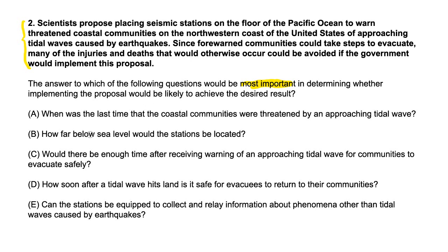B says: how far below sea level would the stations be located? That's completely irrelevant. C says: would there be enough time after receiving warning of an approaching tidal wave for communities to evacuate safely? C could very well be the answer. If the answer is yes, there would be enough time — that supports the entire proposal, because it means people could evacuate and lives would be saved. If the answer is no and people wouldn't be able to react fast enough, then this is a completely useless proposal.